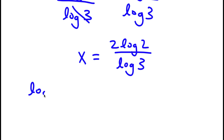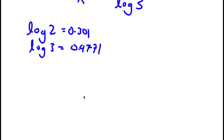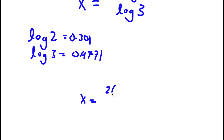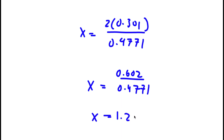Since log 2 equals 0.301 and log 3 equals 0.4771, I have x equals 2 times 0.301 over 0.4771. Since 2 times 0.301 equals 0.602, dividing by 0.4771 gives x approximately equal to 1.26. So this is my answer.